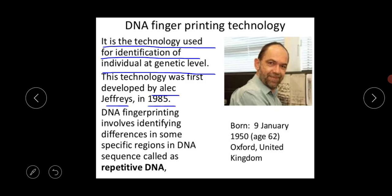The basic definition of DNA fingerprinting: it is also called DNA typing, DNA genetic fingerprinting, or DNA profiling. DNA profiling or DNA fingerprinting is a technique to identify a person on the basis of their DNA specificity. This technique was developed by scientist Alec Jeffreys in 1985. DNA fingerprinting involves identifying differences in some specific regions in DNA sequences called repetitive DNA.